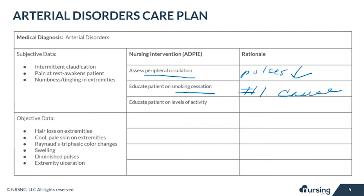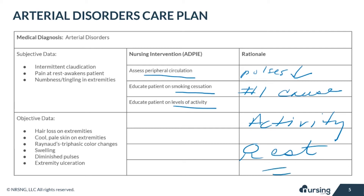When we talk about activity in patients with arterial disorders, we must talk about intermittent claudication, which is muscle pain that occurs with a predictable amount of activity and then goes away with rest. Intermittent claudication is indicative of ischemia to muscle tissue. The patient must be taught to exercise only to the point of intermittent claudication and then rest until the pain goes away.